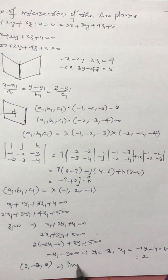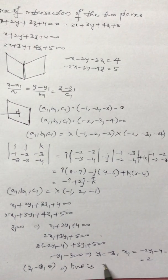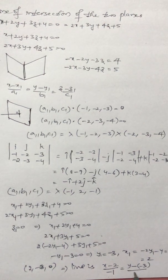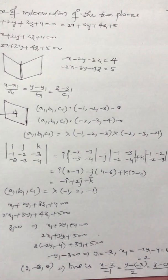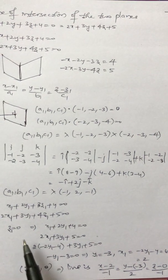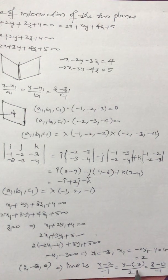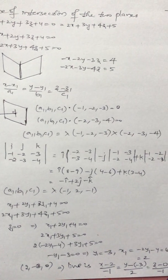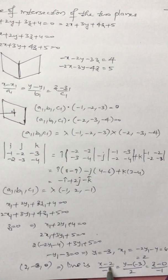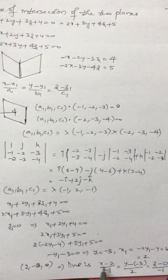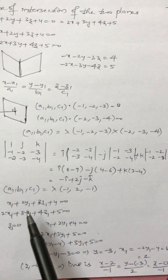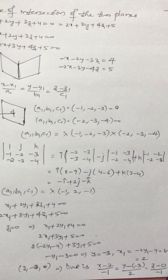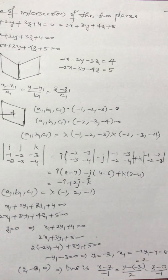Finally, the line equation is: x minus 2 by minus 1 equals y minus (minus 3) by 2 equals z minus 0 by minus 1. Alternatively, I can make x1 equal to 0 and find y1 and z1, or make y1 equal to 0 and find x1 and z1. We make only one variable 0 at a time to find the point, then substitute into the line. This is the required line equation for the intersection of the two planes.